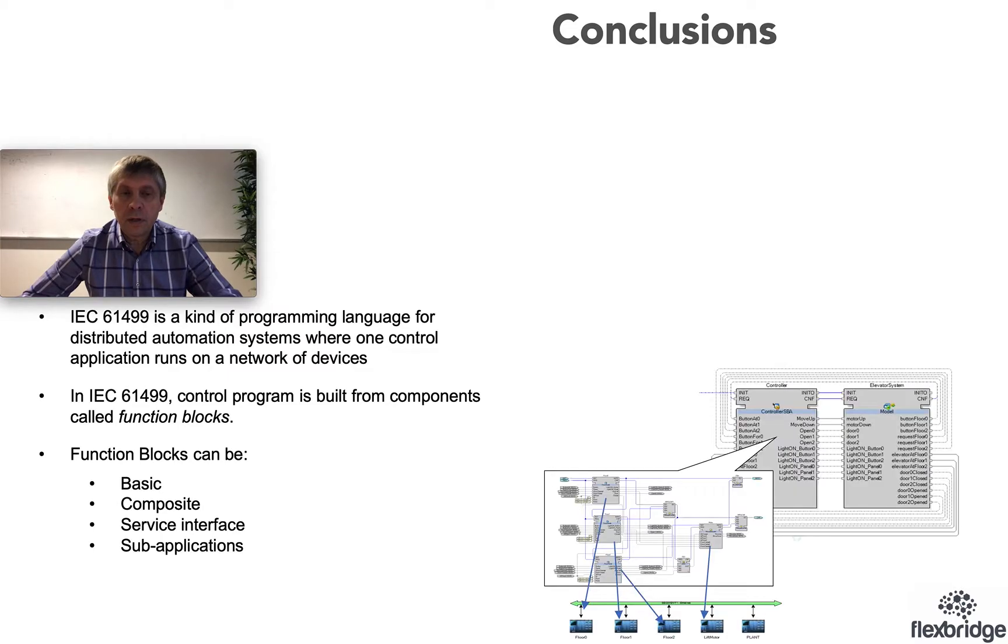There are also artifacts that are called sub-applications. These sub-applications look like composite function blocks, so they are defined again as a network of function blocks, but content of these sub-applications can be distributed across different devices. So that is four basic artifacts of this programming language.